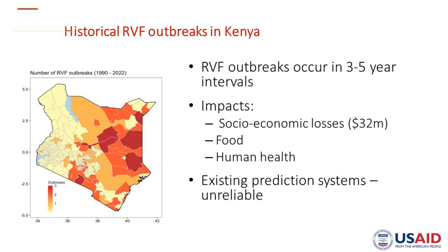We have existing prediction systems which FAO and others have developed, based on NDVI, occasionally found online. But we have found huge challenges using those systems, because NDVI is a product — it's an outcome of rainfall. So you are better off using a more primary dataset rather than going for NDVI, which also responds to rainfall just like RVF.